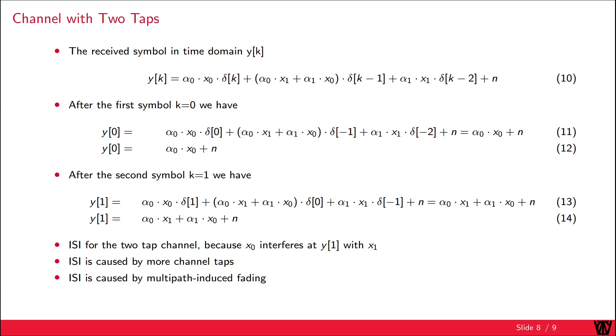These taps are caused by multipath propagation. So in literature, you speak of multipath induced fading. Inter-symbol interference can be mitigated by applying an equalizer at the receiver, which will be discussed in another video.